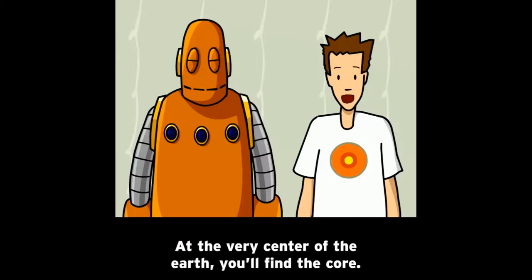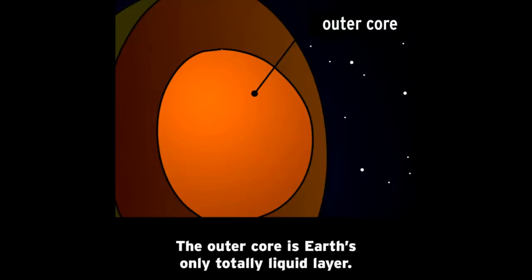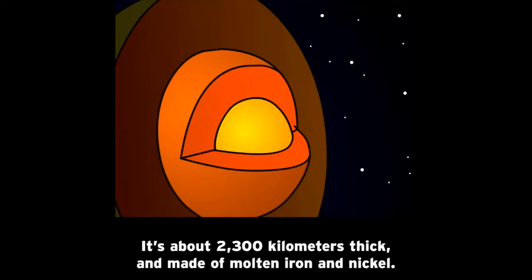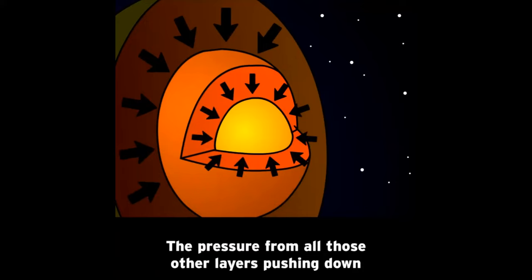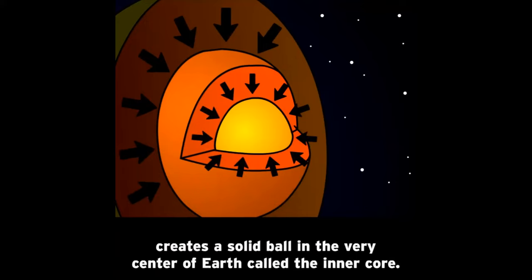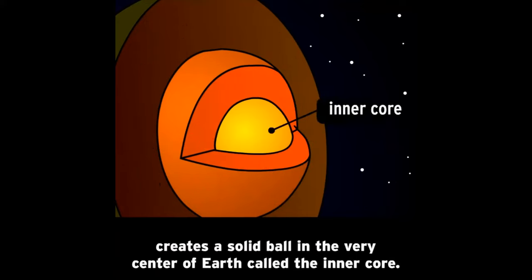At the very center of the Earth, you'll find the core. The outer core is Earth's only totally liquid layer. It's about 2,300 kilometers thick and made of molten iron and nickel. The pressure from all those other layers pushing down creates a solid ball in the very center of Earth called the inner core.